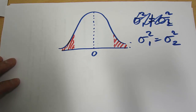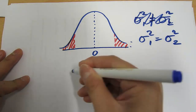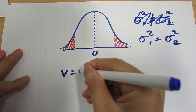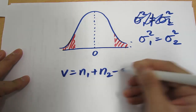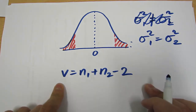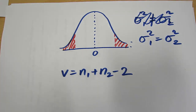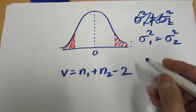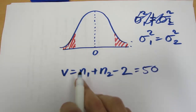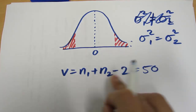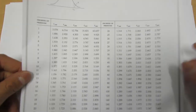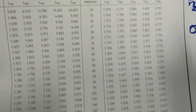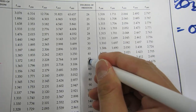When the two population variances are equal, the degrees of freedom — we'll call it V — is equal to N1 plus N2 minus 2. We need the degrees of freedom because we use our student t tables to find the critical values, which tell us the cutoff for the rejection regions. For example, if N1 plus N2 minus 2 equals 50, we look up 50 for our degrees of freedom in the student t distribution.